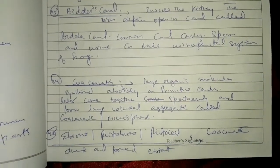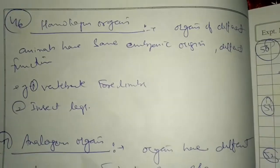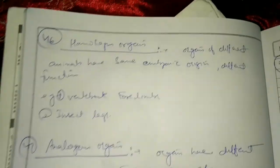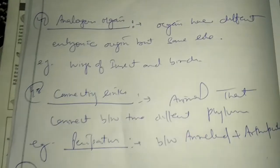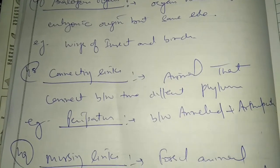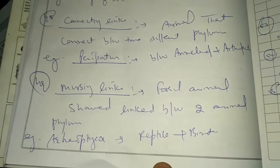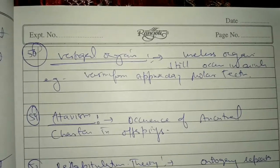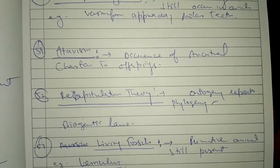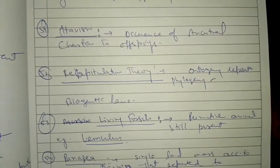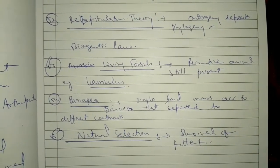Conservation, eviont, protocell, homologous organ, analogous organ, connecting links, missing links, vestigial organ, atavism, recapitulation theory, living fossil, peningia, and natural selection.